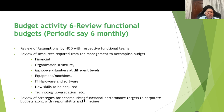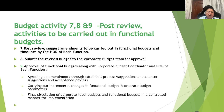Activity six is the review of the functional budgets, usually done at the six-month level. The HOD of each function — such as architecture, interior, or MVP — will review with their respective team the following parameters: review of assumptions; review of resources required from top management to accomplish budget targets, including financial resources, organization structure, manpower numbers, equipment, machines, IT hardware and software, new skills to be acquired, and technology application. The HOD will also review strategies for accomplishing the functional performance targets and aligning with corporate budgets, along with responsibilities and timelines.